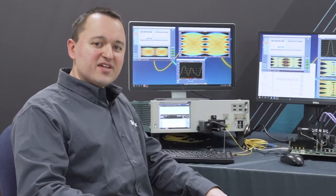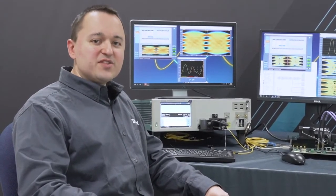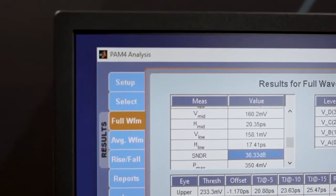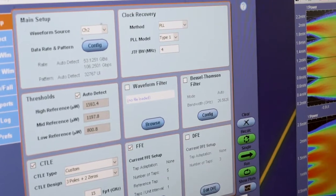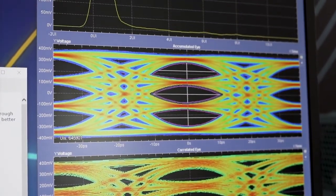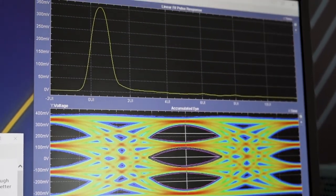Once you have the signal going into the oscilloscope, you can then use the PAM4 analysis software to analyze it. The PAM4 analysis software features powerful software clock recovery specifically designed for PAM4 and recovers the clock directly from the signal itself without the need for an additional clock recovery unit.